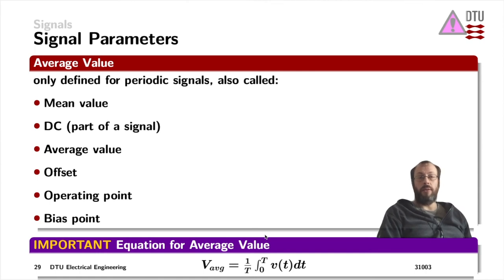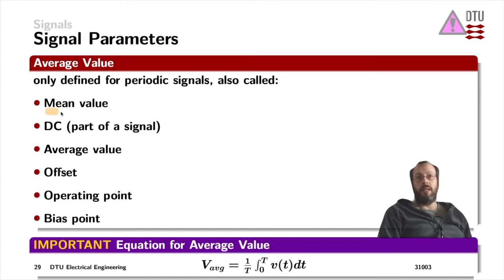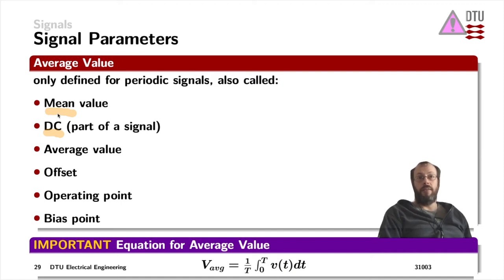Another parameter related to amplitude is the average value of a signal. It is only defined for periodic signals, not for a DC signal itself. It has many names in electronics: it's the mean value, which is a mathematical term. It's also called the DC part of a signal. If the signal itself is DC, its average value would be the same as the DC, but the mathematical definition for the mean value would not be valid in that case.